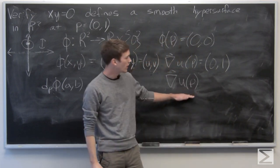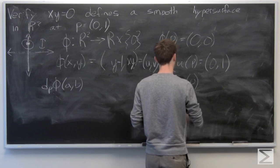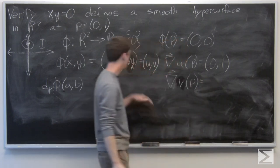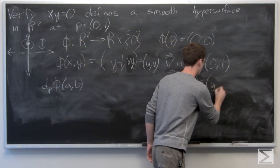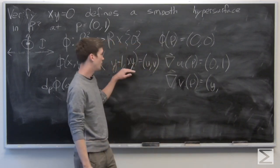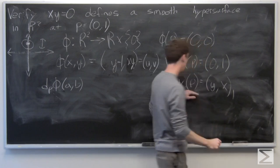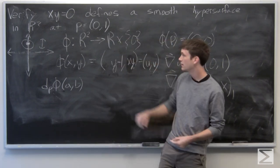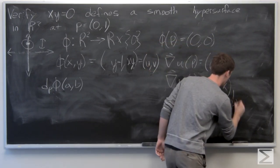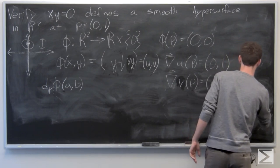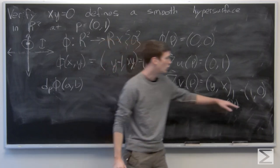And the gradient vector of v at p is going to be the partial derivative of v with respect to x, which is y, and the partial derivative of v with respect to y, which is x. And we want to evaluate that at p, where p is 0, 1. So we get that the gradient vector of v at p is 1, 0, and the gradient vector of u at p is 0, 1.